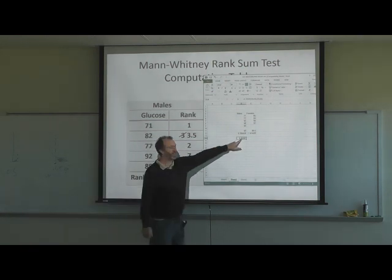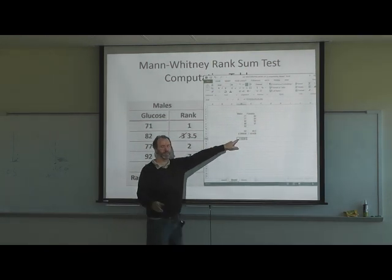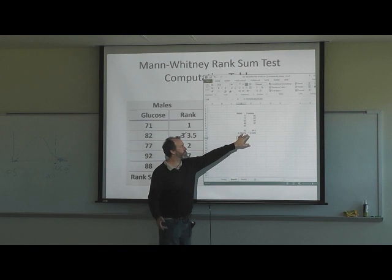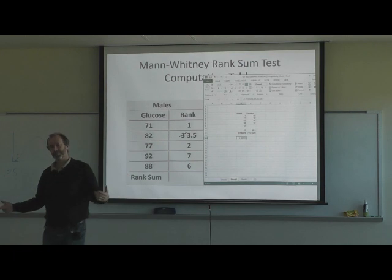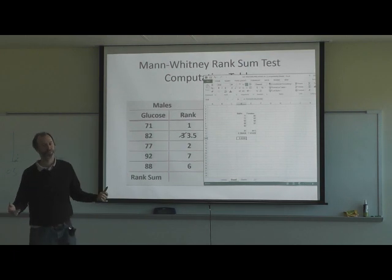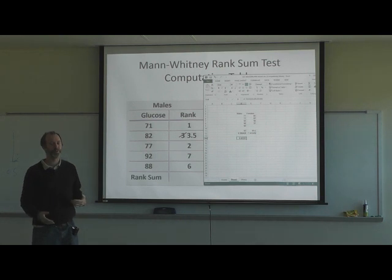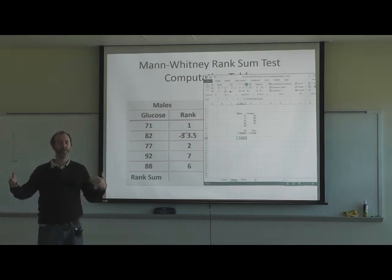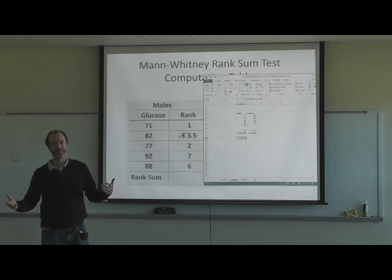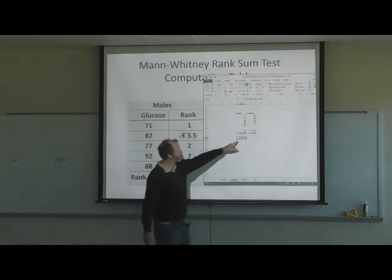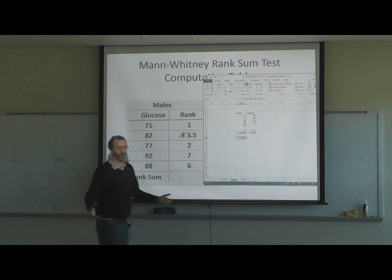The p-value of 0.82 from that F-test means there's an 82% probability that the variances from these two samples are equal. When we pick a critical p-value of 0.05, we're saying the two are different only if there's a 5% chance or less that they're the same. If this were something like 0.02, we would say the variances are not equal and we'd have to do a different test.